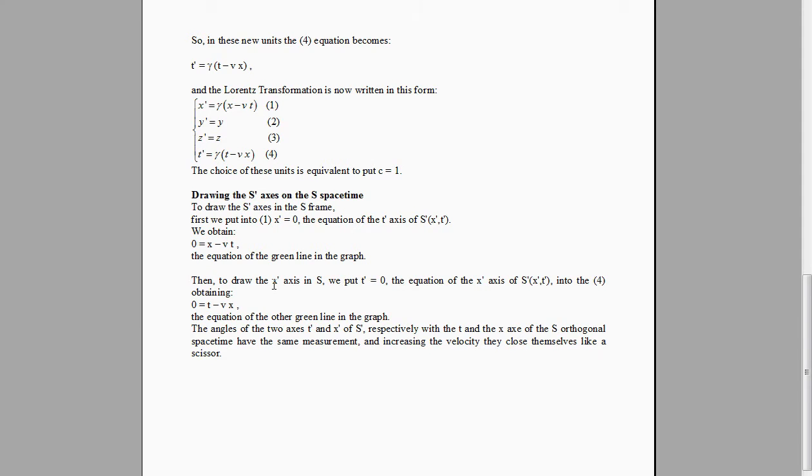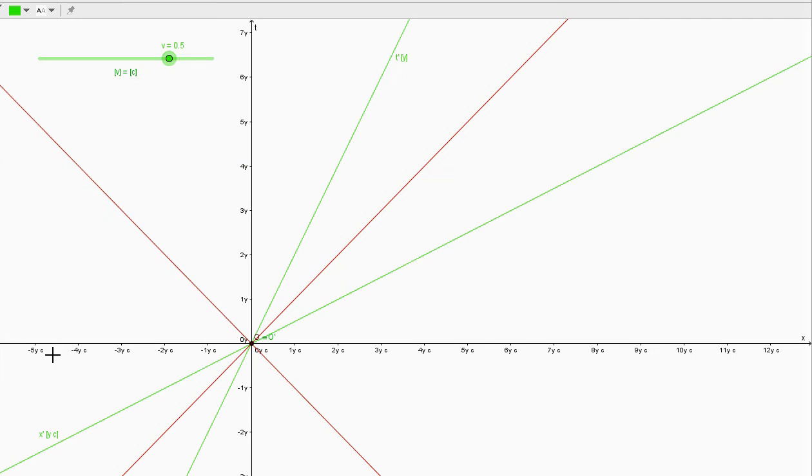Then, to obtain the x' axis of S', we put t' equals 0, the equation of the x' axis of S', into the fourth equation, obtaining the equation of the other green line in the graph, this line.